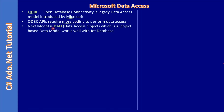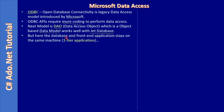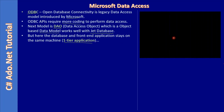The next model is DAO — Data Access Object — which is an object-based data model. It is a set of APIs and is a procedural model. DAO works well with Jet databases, and the database and front-end application reside on the same machine, which is why we call it a one-tier application.